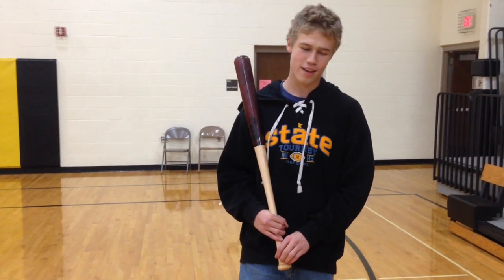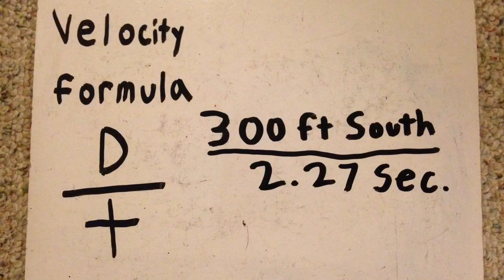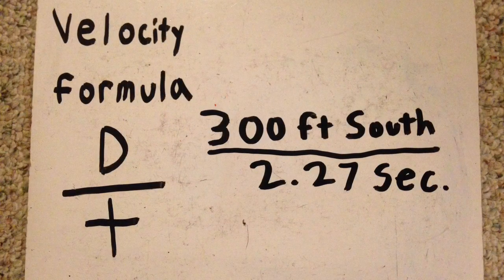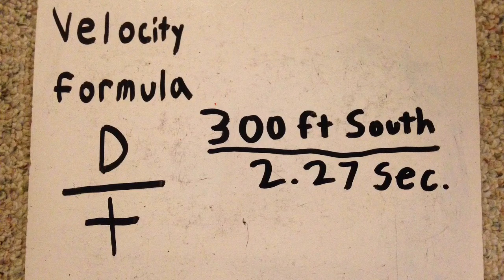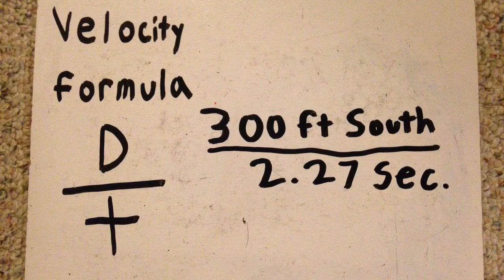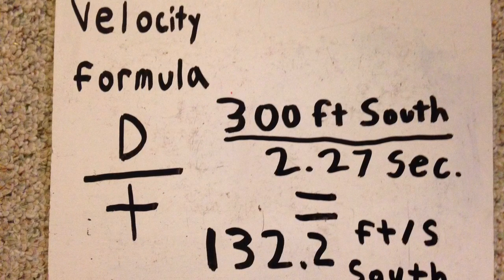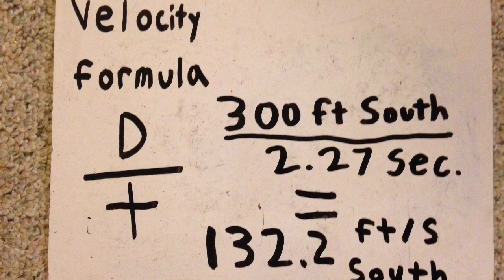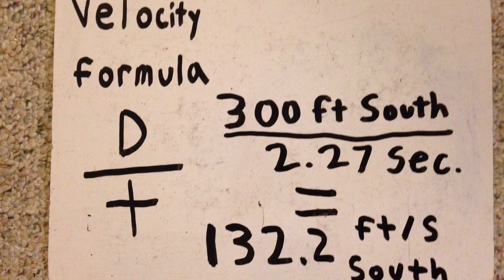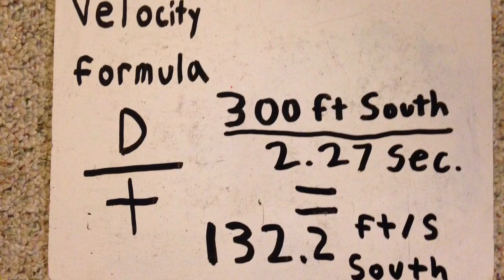When I'm batting, I have to react to the pitch rather quickly. One time, I hit the ball 300 feet in 2.27 seconds. What was the average velocity of the ball traveling at? We know that velocity equals displacement over time. All we have to do is take 300 feet, our displacement, and divide it by 2.27 seconds, our time. We divide 300 by 2.27, and we get our answer of 132.2 feet per second south.